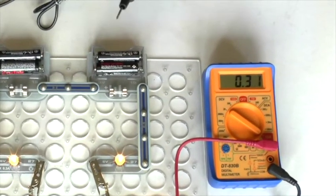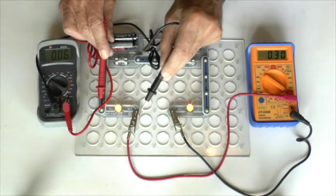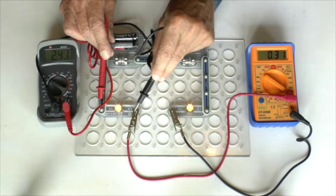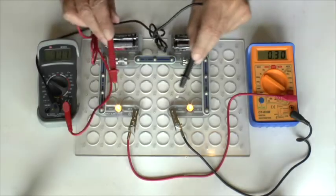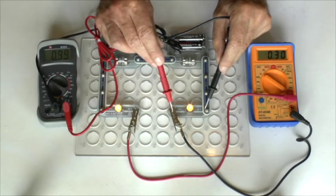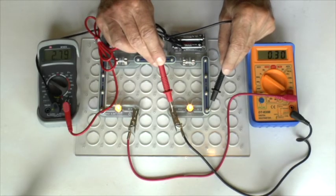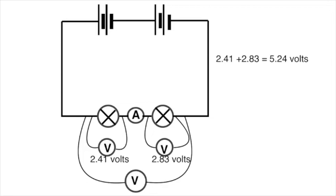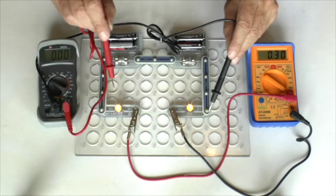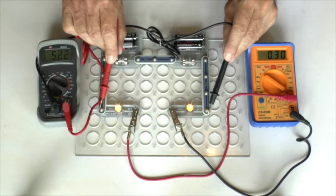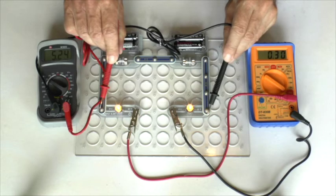We're measuring the potential difference or the energy per coulomb across each bulb. That's 2.41 volts over the first bulb and the second 2.83 volts. Adding these to the circuit diagram, we'd expect the total of the two to be 5.24 volts and indeed that's what it is.